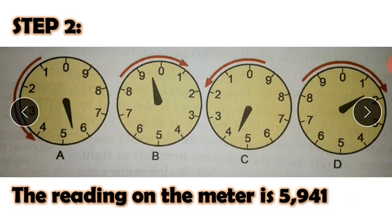In step two, always read all the dials from left to right. This means you will start reading from dial A, then B, then C, then D.